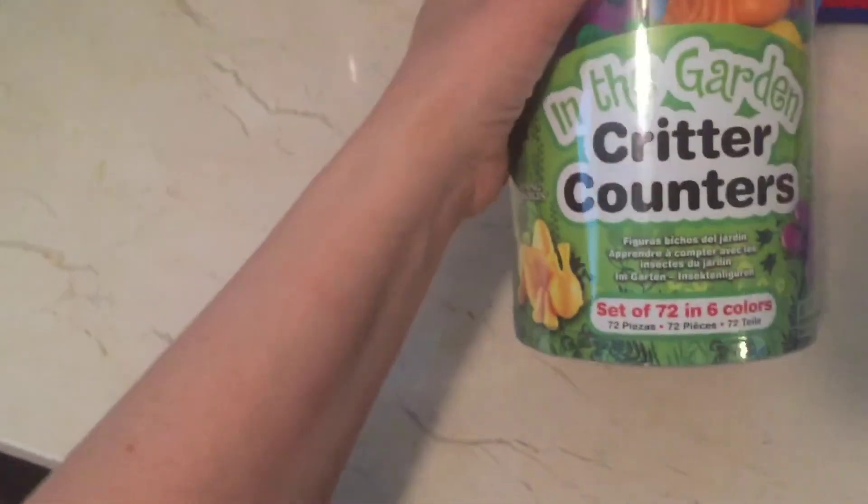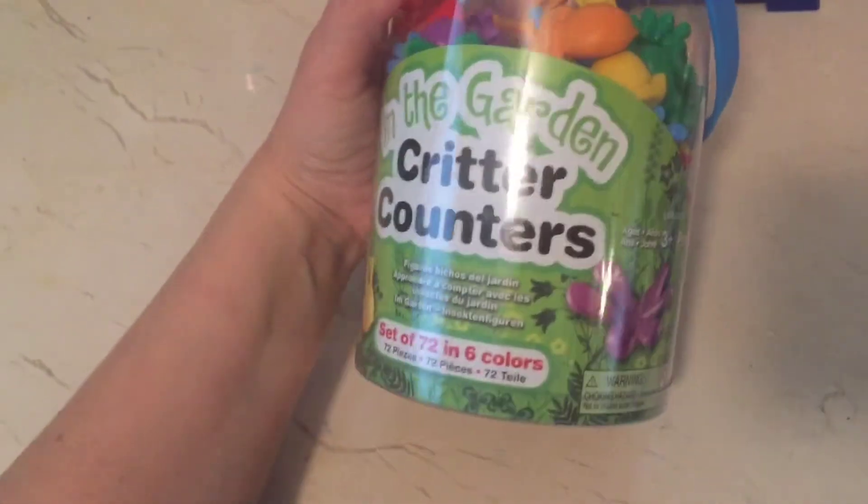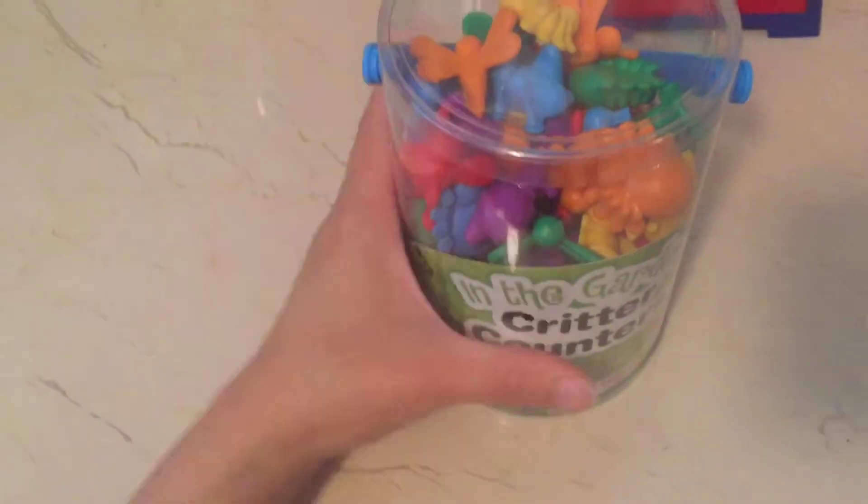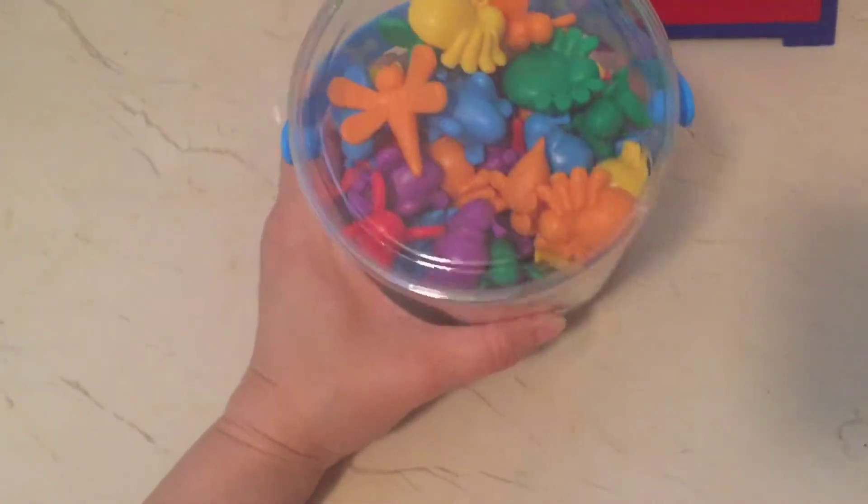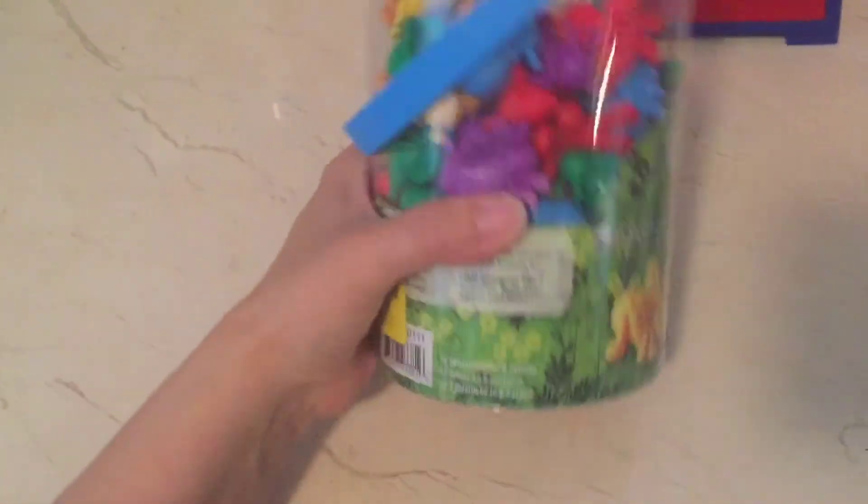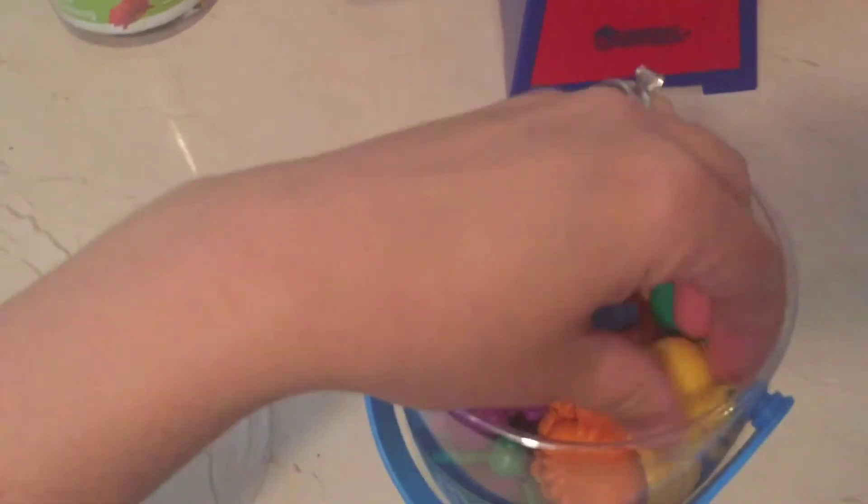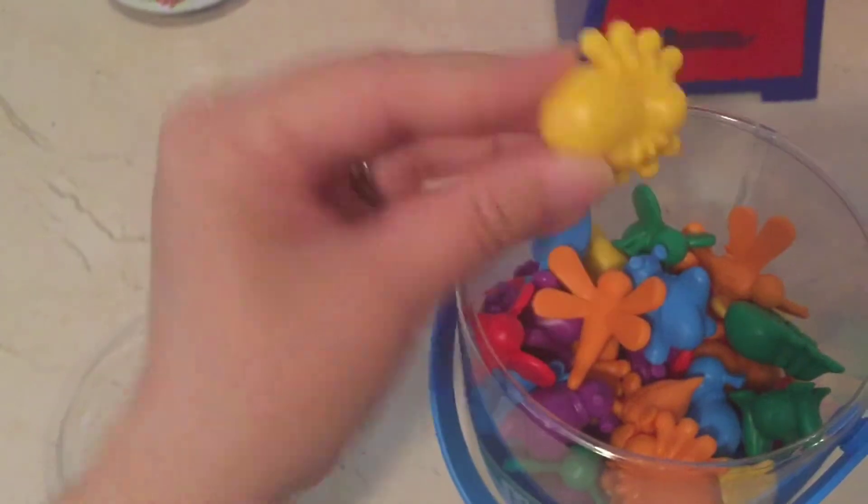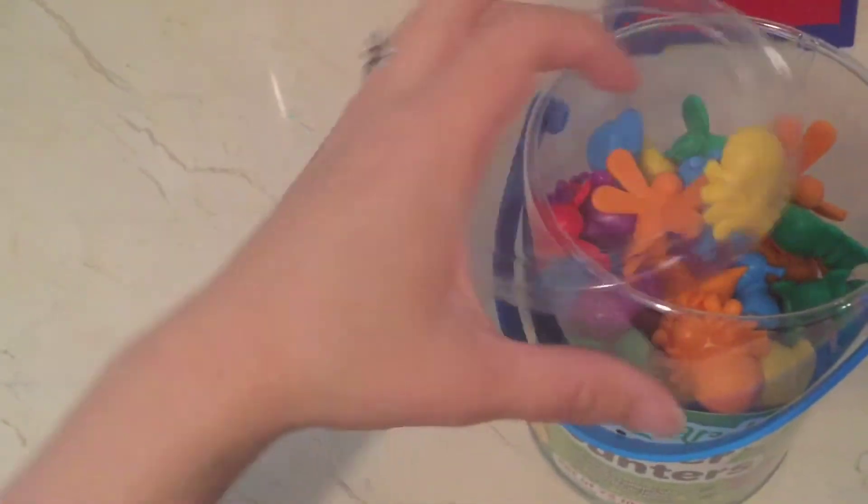I purchased these In the Garden critter counters, there's 72 of them in six different colors and this is great for one-to-one correspondence, color recognition, just number recognition. We really like using these, they're bigger for my little guy and my girls like them as well and they're good quality.